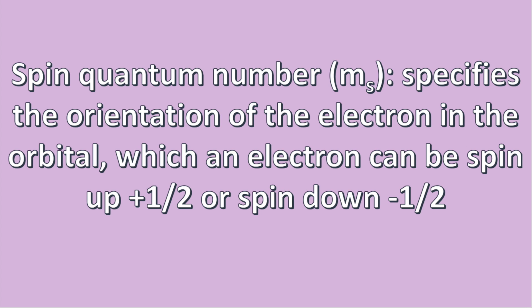So those three quantum numbers we've described so far describe the orbitals. The last quantum number represents spin, which is denoted by ms, and specifies the orientation of the electron in the orbital. An electron can be spin up, denoted by +½, or spin down, denoted by −½. These are the only values allowed for spin. In the previous analogy, the spin would represent the street number.